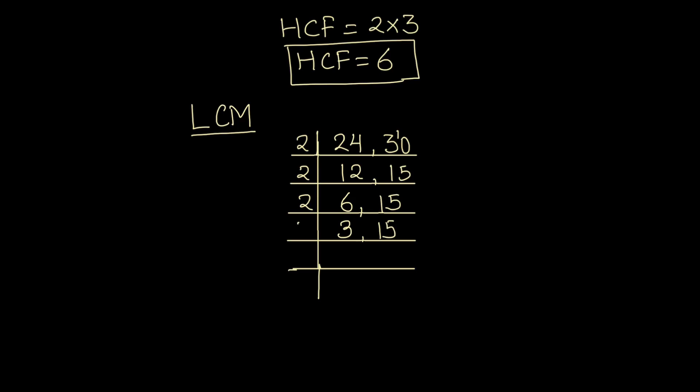Now 3 and 15 are both divisible by 3. 3 divided by 3 is 1, and 15 divided by 3 is 5. And 5 is a prime number — it is only divisible by 5. So 5 divided by 5 gives 1. Now both numbers are fully divided.